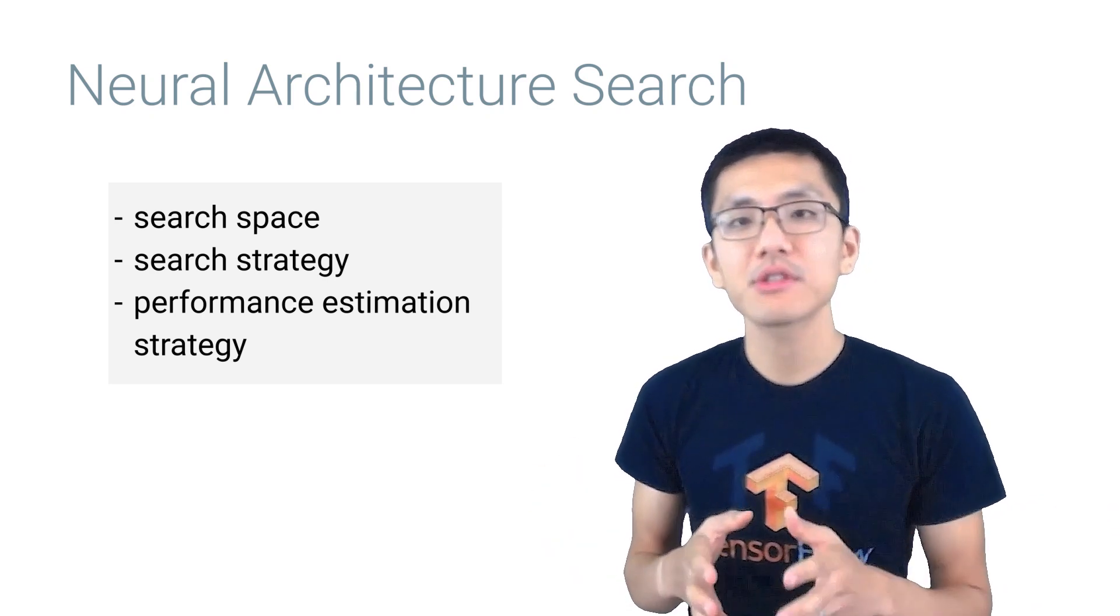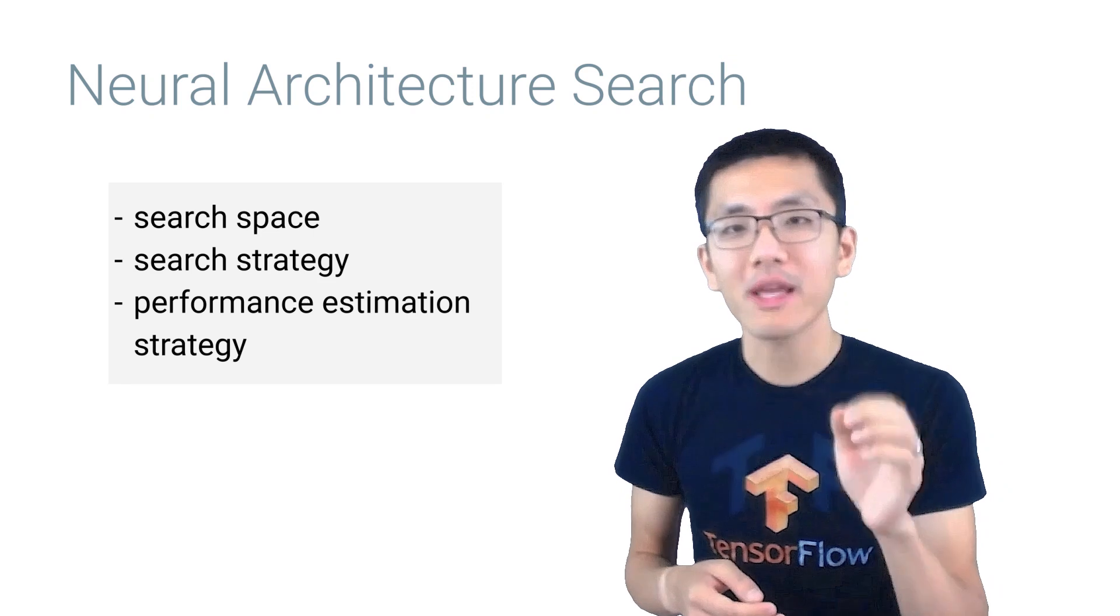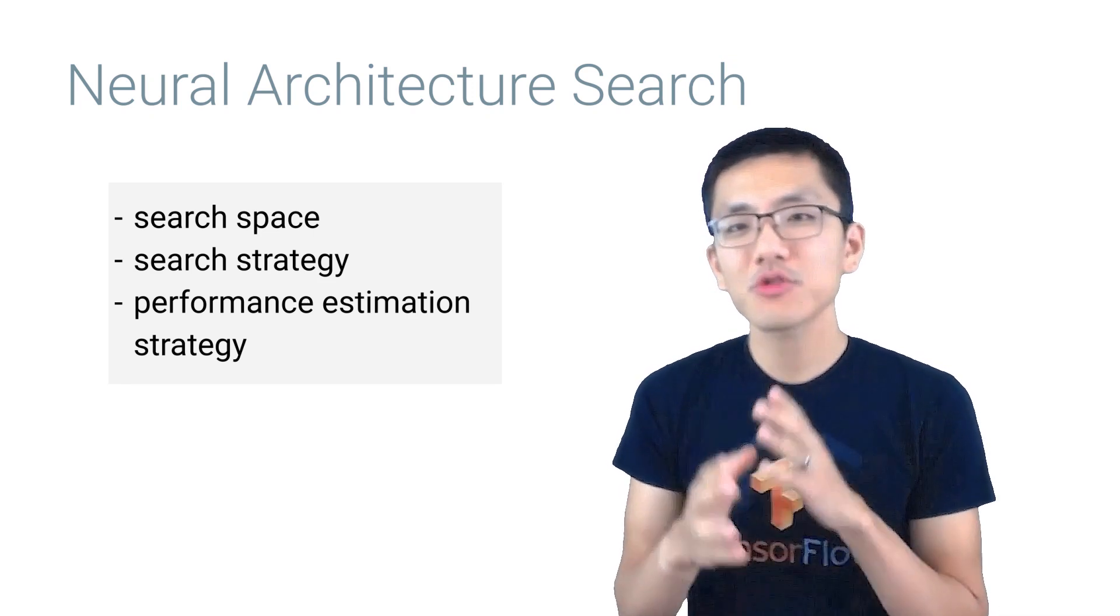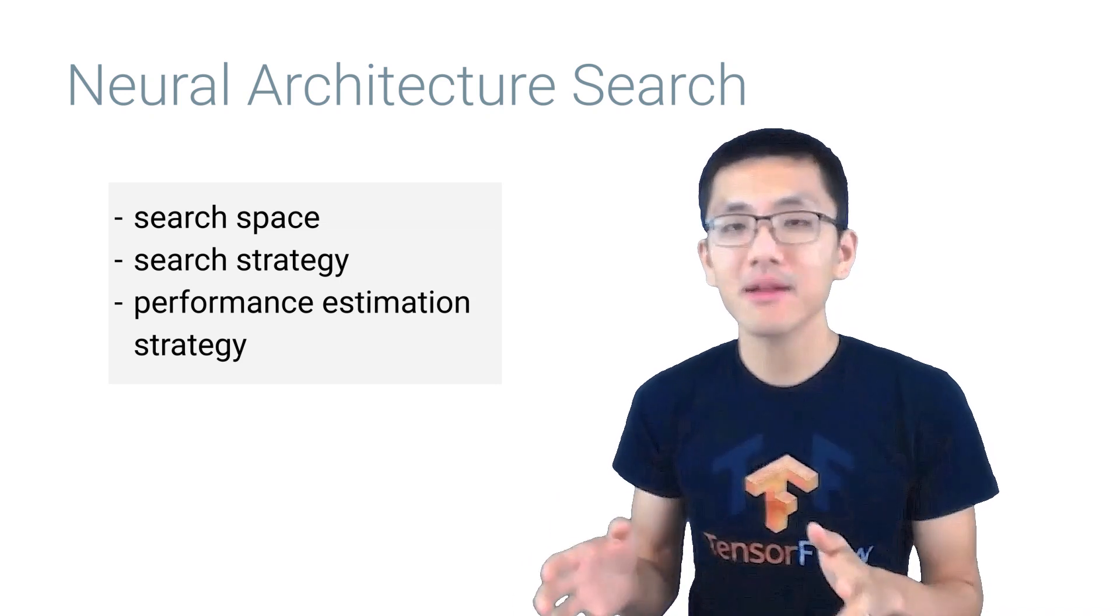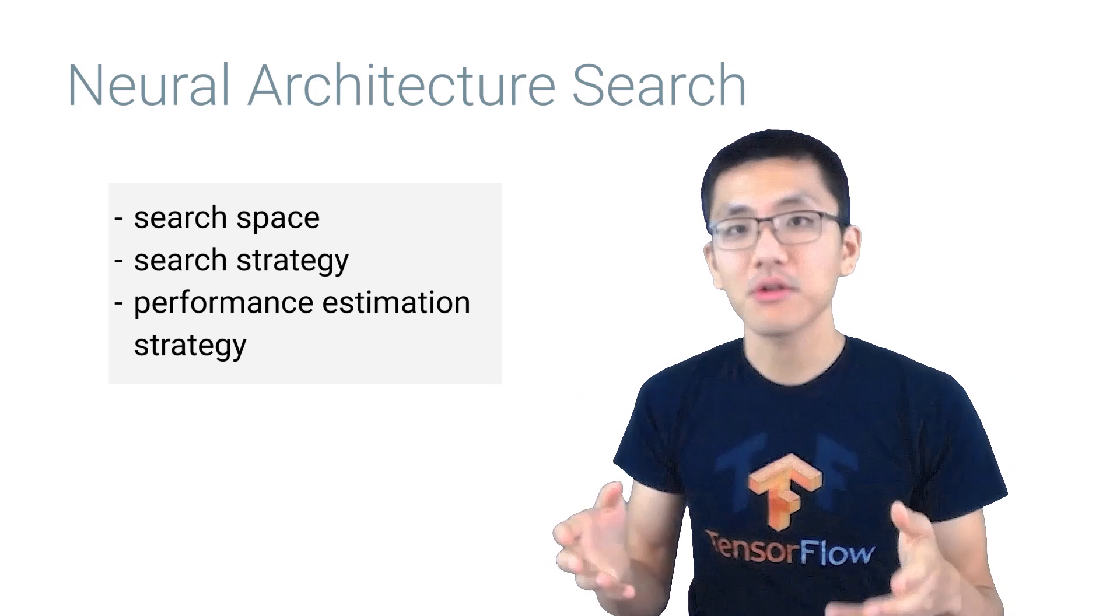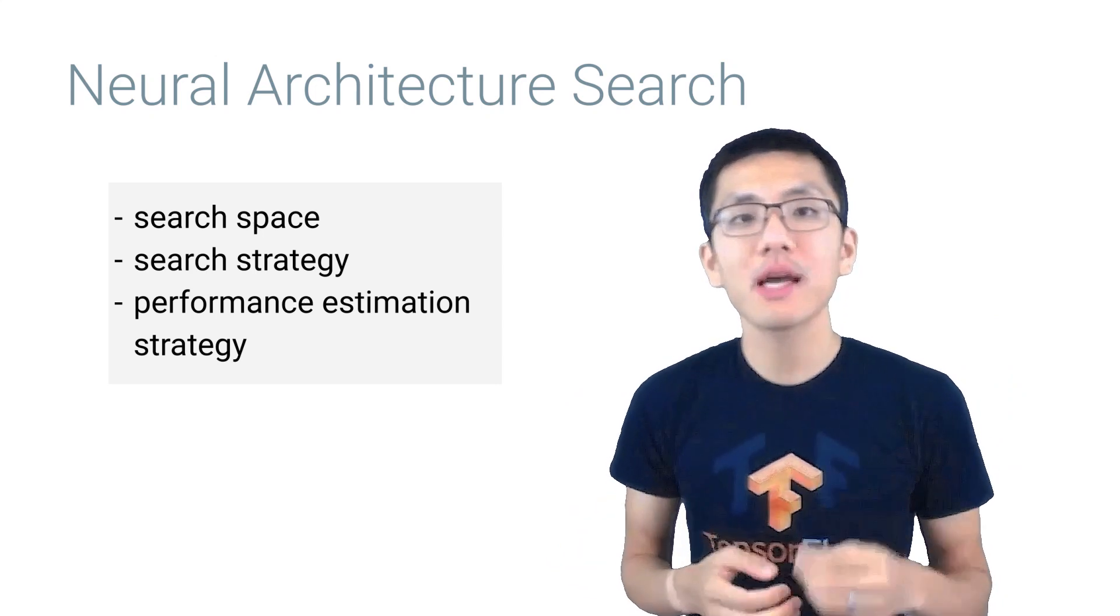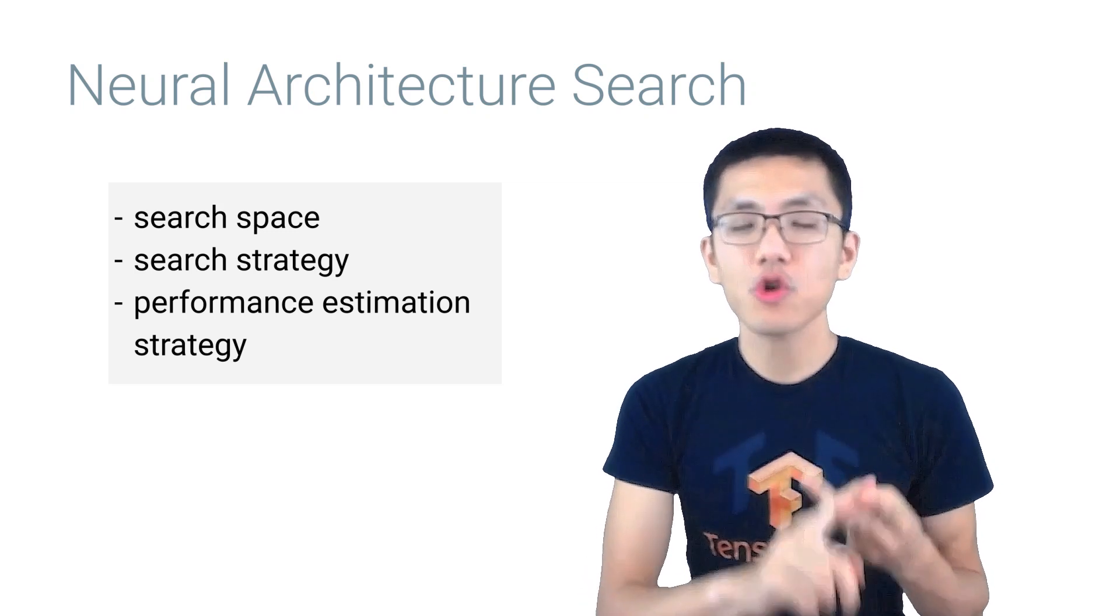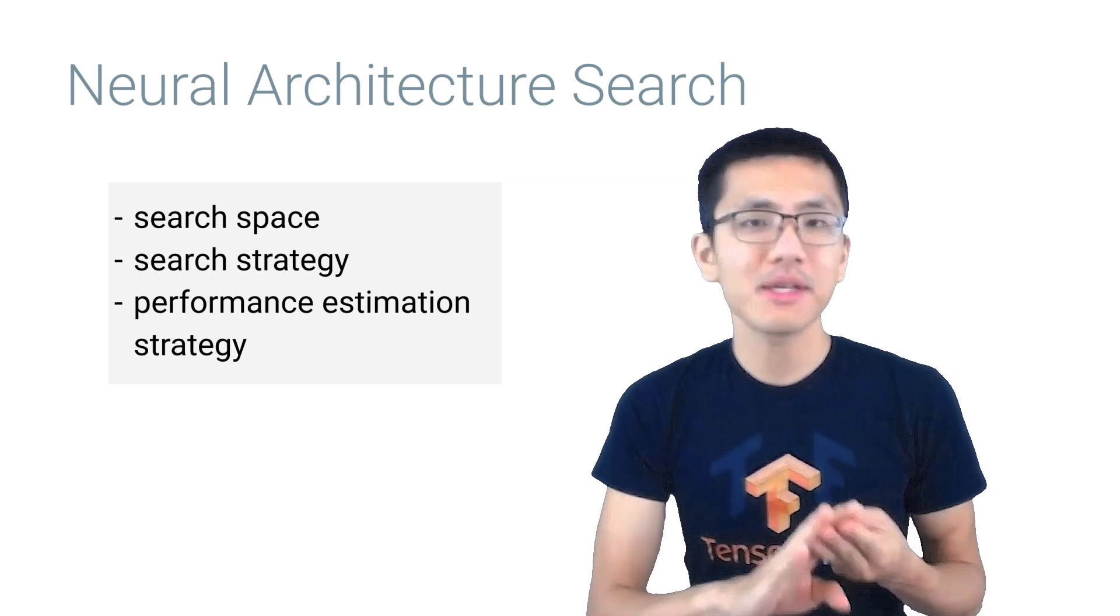This area of research is all about discovering the right model for a given machine learning problem, often through trying out a large variety of candidate models and then automatically selecting the best model. This task can be broken down into three broad steps: search space, search strategy, and then performance estimation strategy.